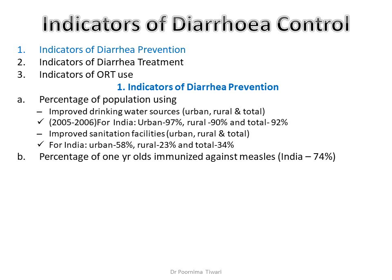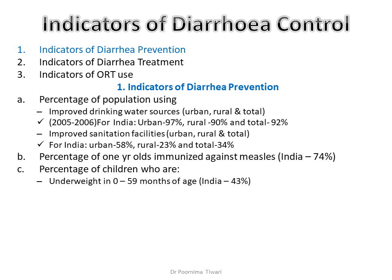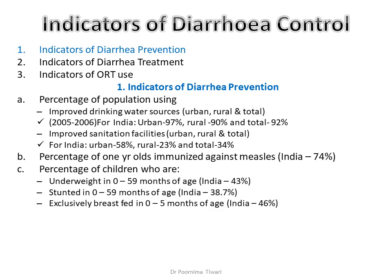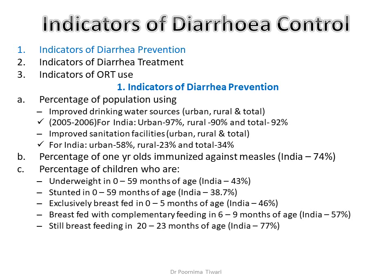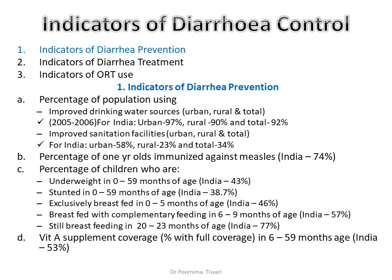Further prevention indicators include: percentage of 1-year-olds immunized against measles; percentage of children under 5 who are underweight; children under 5 who are stunted; children under 6 months who are exclusively breastfed; children between 6 to 9 months in whom complementary feeding has been introduced alongside breastfeeding; children between 1 to 2 years still breastfeeding; and children 6 months to 5 years who received appropriate Vitamin A supplementation.